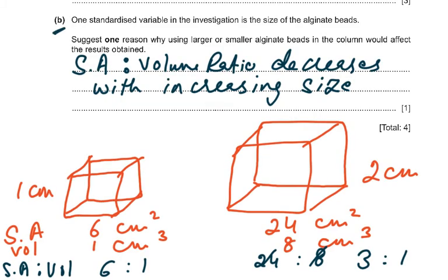For the B part: one standard variable is the size of the alginate beads. Suggest one reason why using larger or smaller alginate beads would affect the results. This relates to the surface area to volume ratio. For a 1 cm cube: surface area is 6 cm², volume is 1 cm³, ratio 6:1. For a 2 cm cube: surface area is 24 cm², volume is 8 cm³, ratio 3:1. Surface area to volume ratio decreases with increasing size.